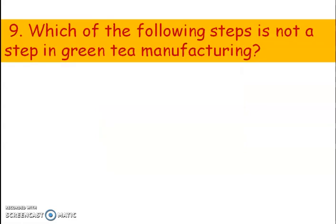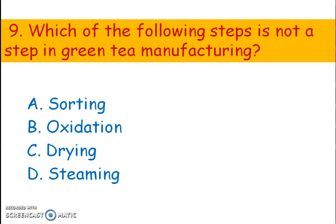Next question. Which of the following steps is NOT a step in green tea manufacturing? Options: A) Sorting, B) Oxidation, C) Drying, D) Steaming. The right answer is option B, oxidation. Oxidation, also known as fermentation, is not a step in green tea manufacturing.